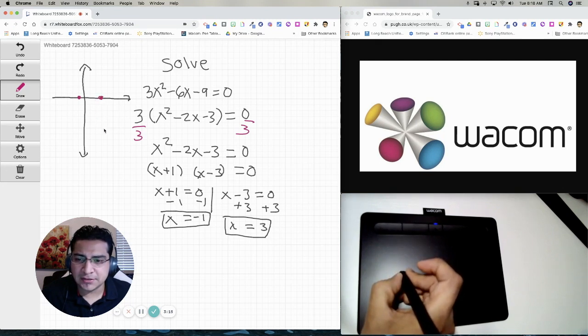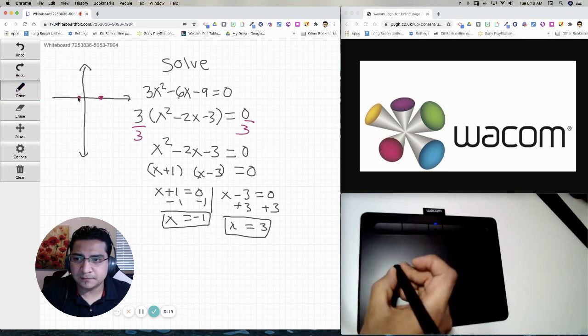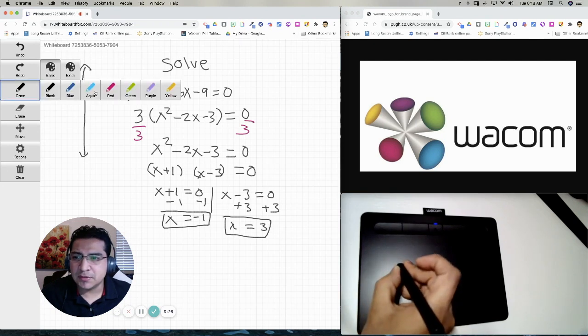They do have the axis of symmetry right in the middle there. So that's going to be 1, 2, 1, 2. So like right here. So I can draw my axis of symmetry.